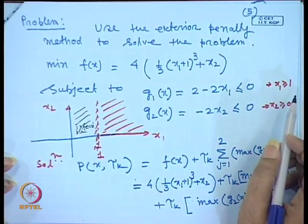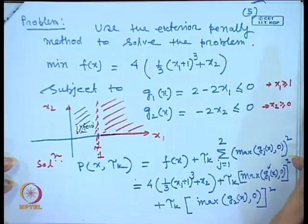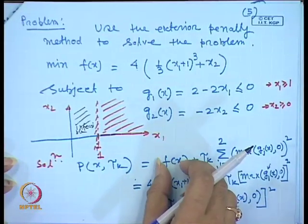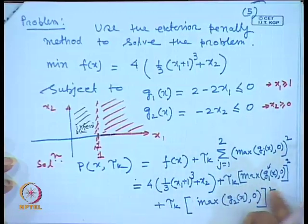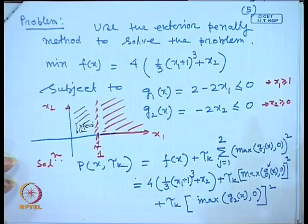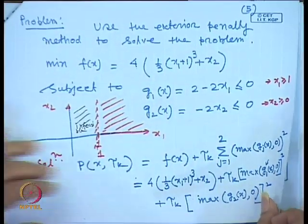Initially we form the penalty function with the objective function and constraints. Then our job is to find the necessary condition for the function to be optimized — that is the analytical solution by finding ∂p/∂x₁ = 0 and ∂p/∂x₂ = 0.